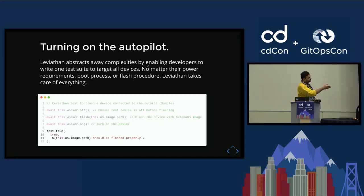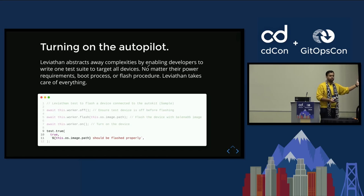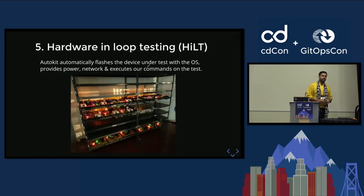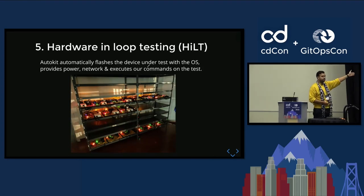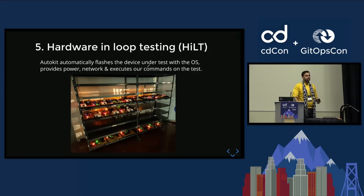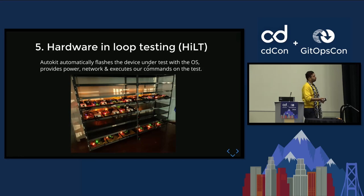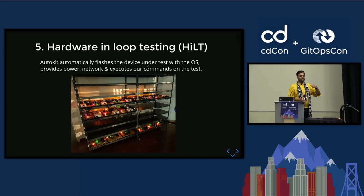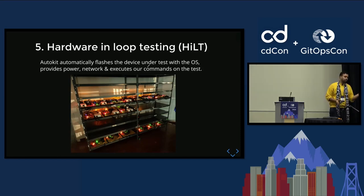In the end there is an assertion in TAP format, which tells you if the image has been flashed or not. The hardware-in-the-loop testing pipeline is our next major component. The image here is from our Galați office where we have AutoKit set up to test all the releases coming in. AutoKit is automatically able to receive commands from Leviathan — power on devices, flash, turn them off, break them, do whatever you want.